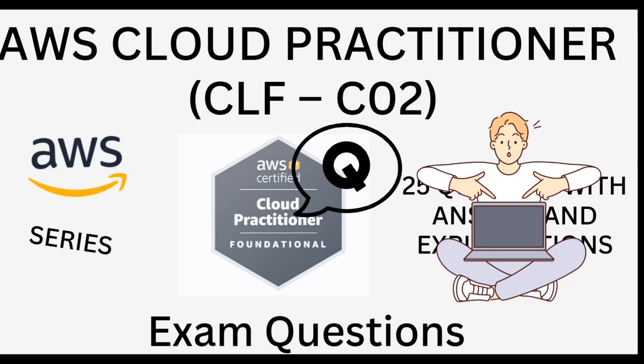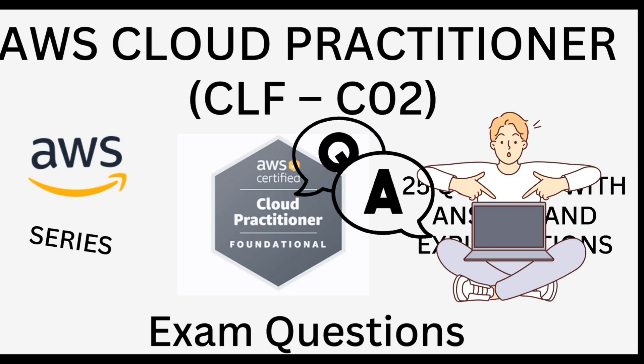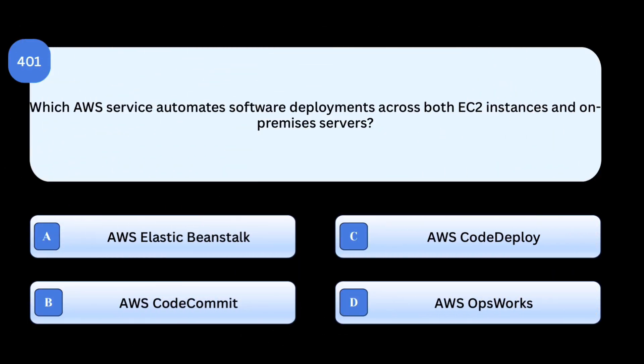Let's go to the new set of questions. Which AWS service automates software deployments across both EC2 instances and on-premises servers?